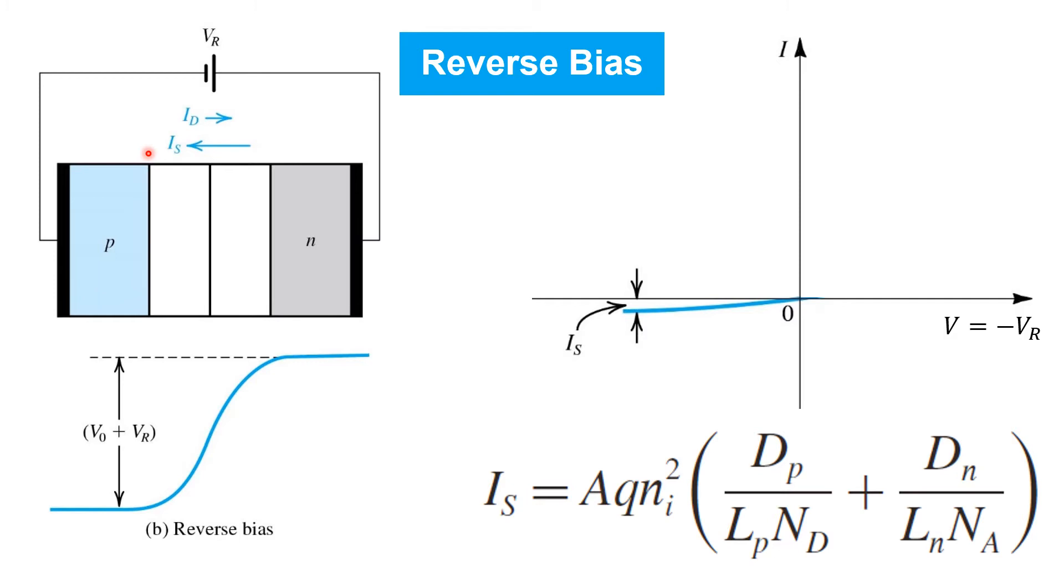This current is a very strong function of temperature, and is a relatively weak function of the reverse voltage applied once the reverse voltage is modest in value. The precise relationship between the reverse current, IS, and the properties of the diode are captured in this expression here. But in summary, a relatively constant reverse current, IS, flows when a PN junction is subjected to a reverse bias voltage VR.